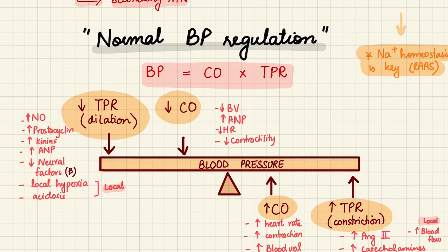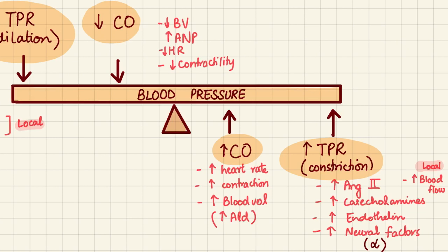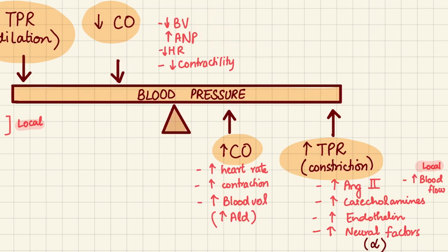Now, a recap of how blood pressure is normally regulated. Blood pressure is chiefly determined by cardiac output and total peripheral resistance. When both go down, blood pressure goes down; when both go up, blood pressure goes up. Vasodilation, local hypoxia, and acidosis decrease blood pressure. Decreased blood volume, increased atrial natriuretic peptide, decreased heart rate, and decreased contractility all decrease cardiac output and thus blood pressure. Increased aldosterone increases cardiac output and blood pressure. Increased total peripheral resistance is caused by vasoconstriction — angiotensin II, catecholamines, endothelin, and neural factors all cause vasoconstriction and thus increased blood pressure.